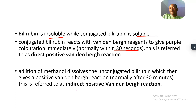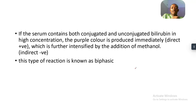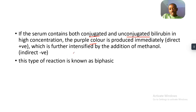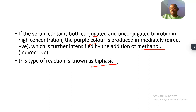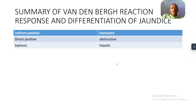Addition of methanol dissolves the unconjugated bilirubin, which then gives a positive Van den Bergh reaction normally after 30 minutes. This is the indirect Van den Bergh reaction. If the serum contains both conjugated and unconjugated bilirubin in high concentration, the purple color is produced immediately — direct — and is further intensified by addition of methanol. This type is called biphasic.